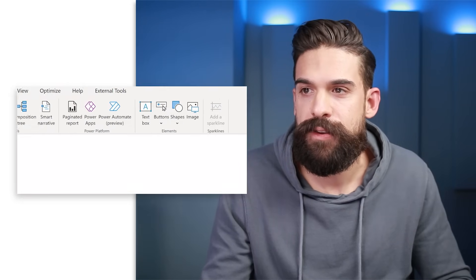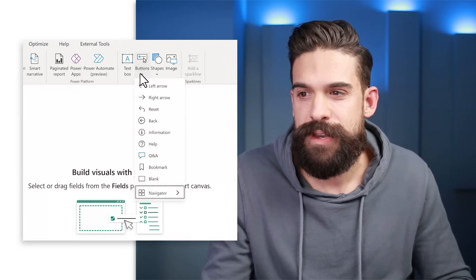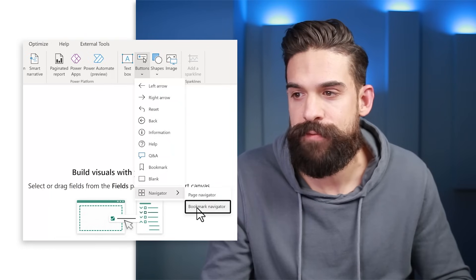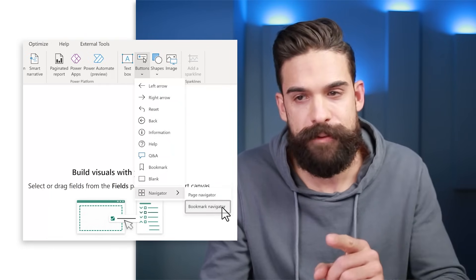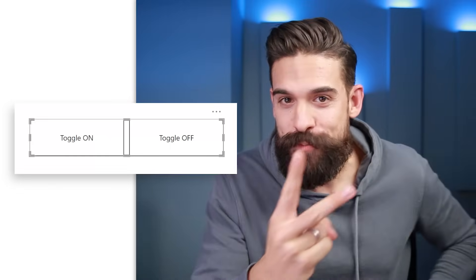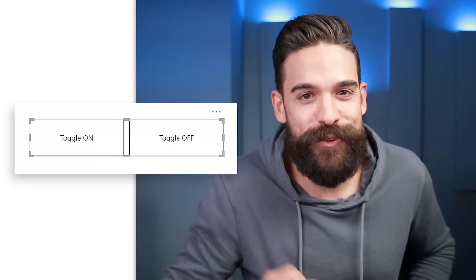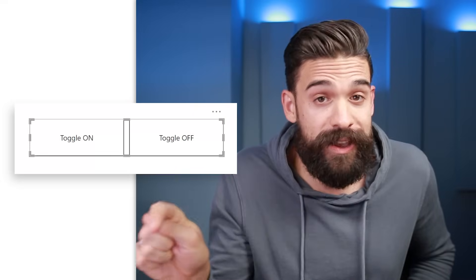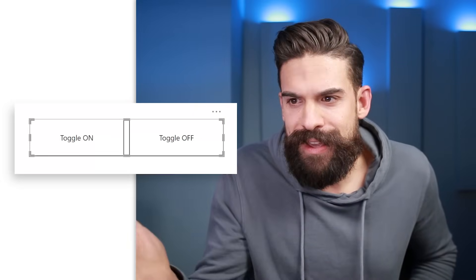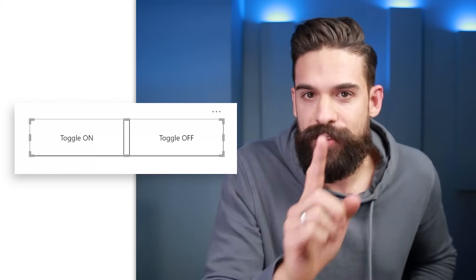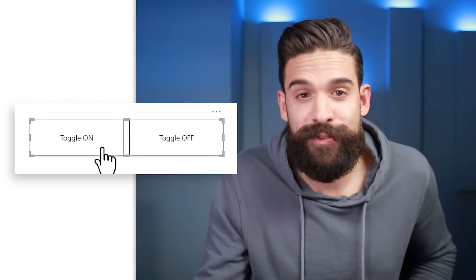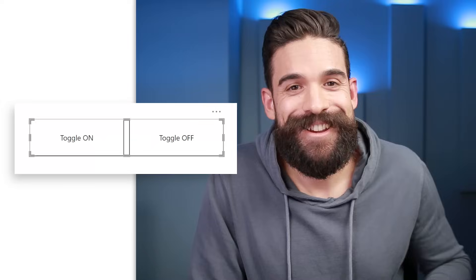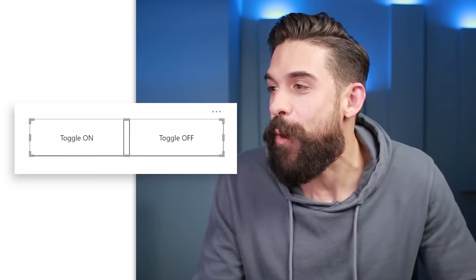The next thing we can do is insert a bookmark navigator. Go to Insert, then Buttons, then Navigator Buttons, and at the bottom you'll find Bookmark Navigator. Here we have our navigator with two buttons — one for the on state and one for the off state. However, with a real toggle it shouldn't matter where you click; the state should just change. So we cannot use two buttons — we need only one button showing.